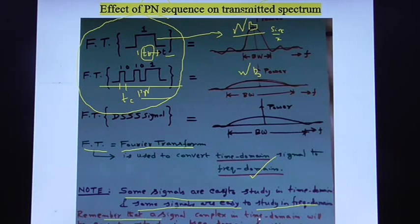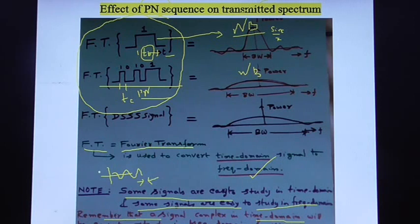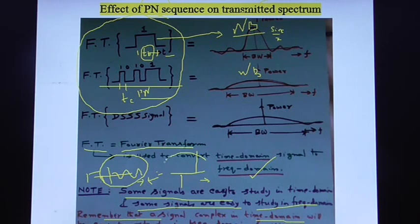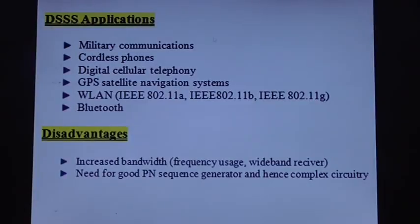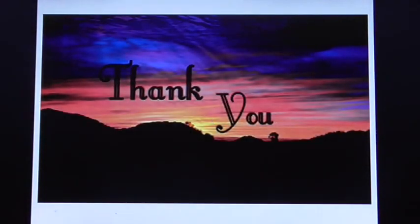Note that some signals are easy to study in the time domain and some in the frequency domain. A signal complex in the time domain will be easy to study in the frequency domain and vice versa. For example, a sine signal is complex in the time domain, but if you take its Fourier transform you get simply two spikes in the frequency domain — so this complex signal can be easily studied in the frequency domain. The various applications of DSSS and its disadvantages are given here — please go through it. Thank you very much.